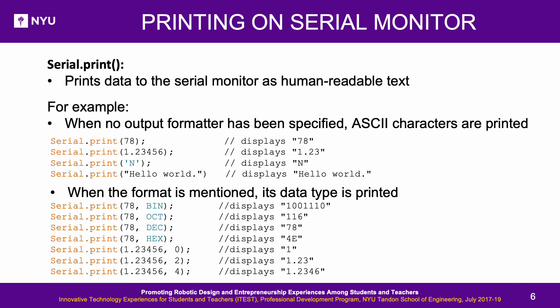Printing on the Serial Monitor: The Serial.print function prints data to the Serial Monitor as human-readable text. ASCII values are printed when the output format is not specified, and a particular data type can be printed by specifying the format. Examples are as shown.